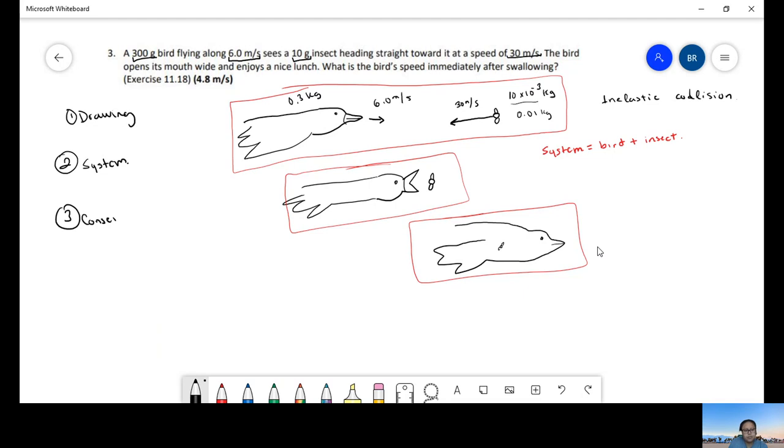So if that's the system, we can do conservation of momentum. Since there's no forces acting on the system, since the system is enclosed, there's nothing coming in and out of the system, it's not interacting with the environment, it's just these two objects. So the change in momentum is going to be equal to zero. Momentum final minus momentum initial equals zero. So momentum final equals momentum initial.